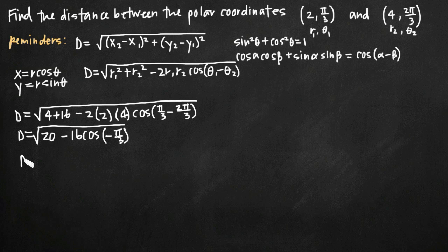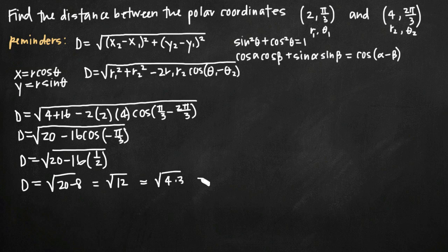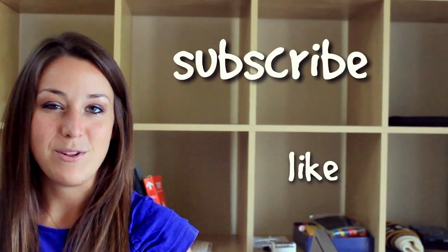So the distance equals √(20 − 16 × 1/2) = √(20 − 8) = √12. We can factor out 4 to write this as √(4 × 3), and since √4 = 2, our final answer is d = 2√3. That's the distance between the two polar points, found using the polar coordinate distance formula. I hope you found that helpful — if you did, like the video and subscribe to be notified of future videos.